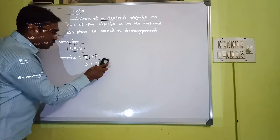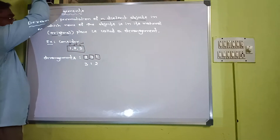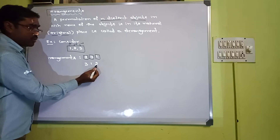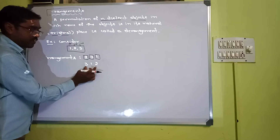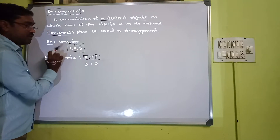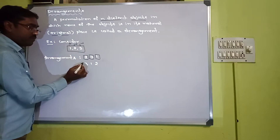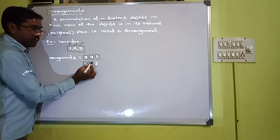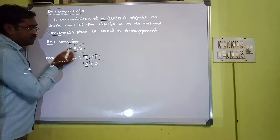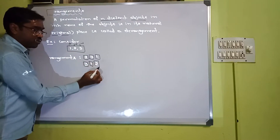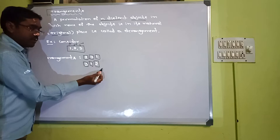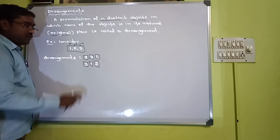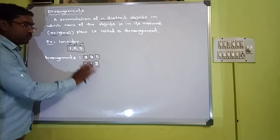Now let us see one more derangement. You can write 3 in the first place, 1 in the second place, 2 in the third place. Comparing with the original: 3 is in the first place but originally it was in the third; 1 is in the second place but originally in the first; 2 is in the third place but originally in the second. So this is one more derangement where no object is in its original place.